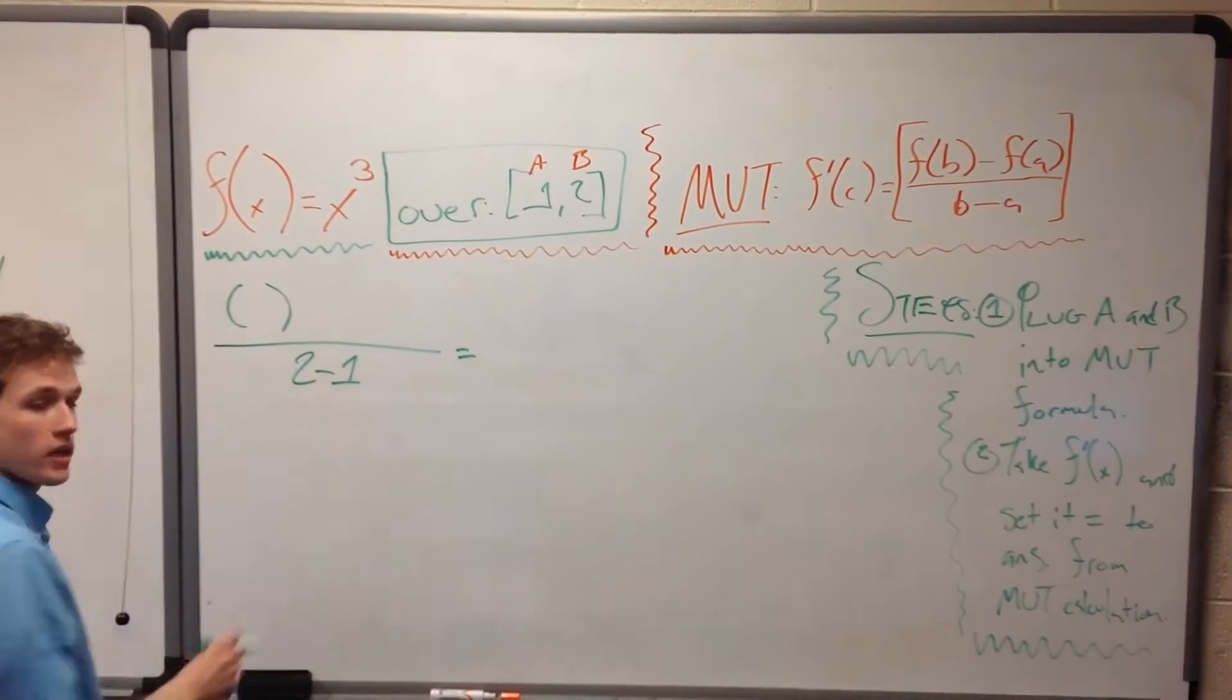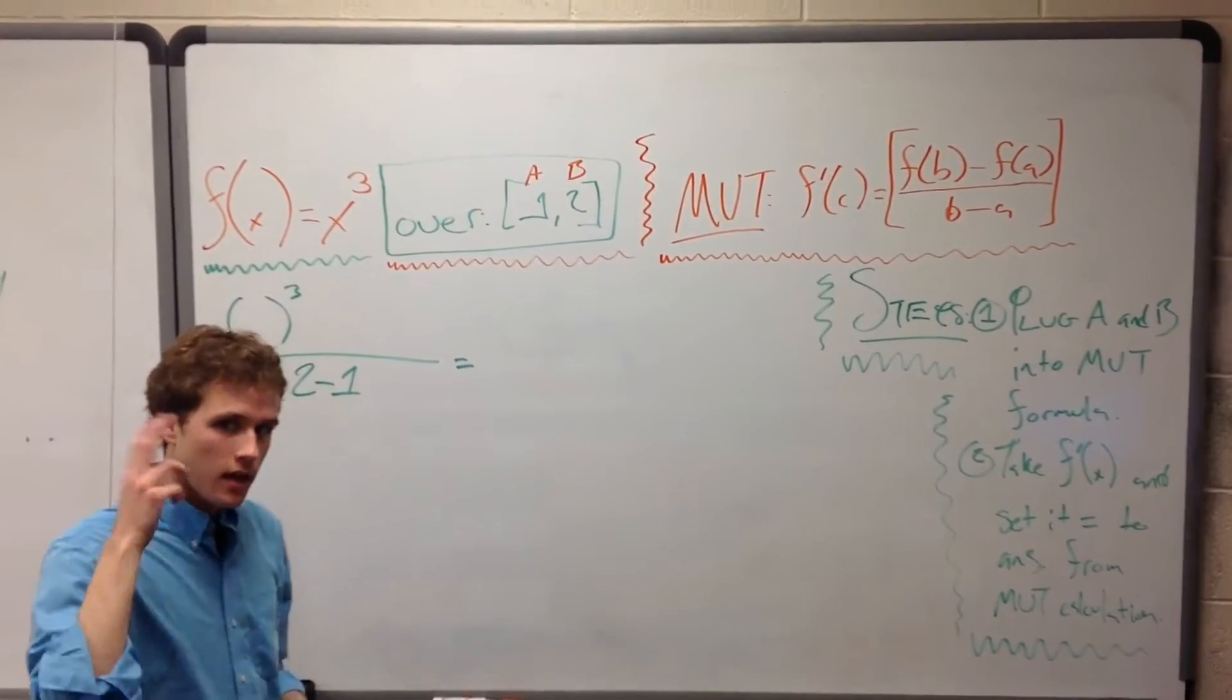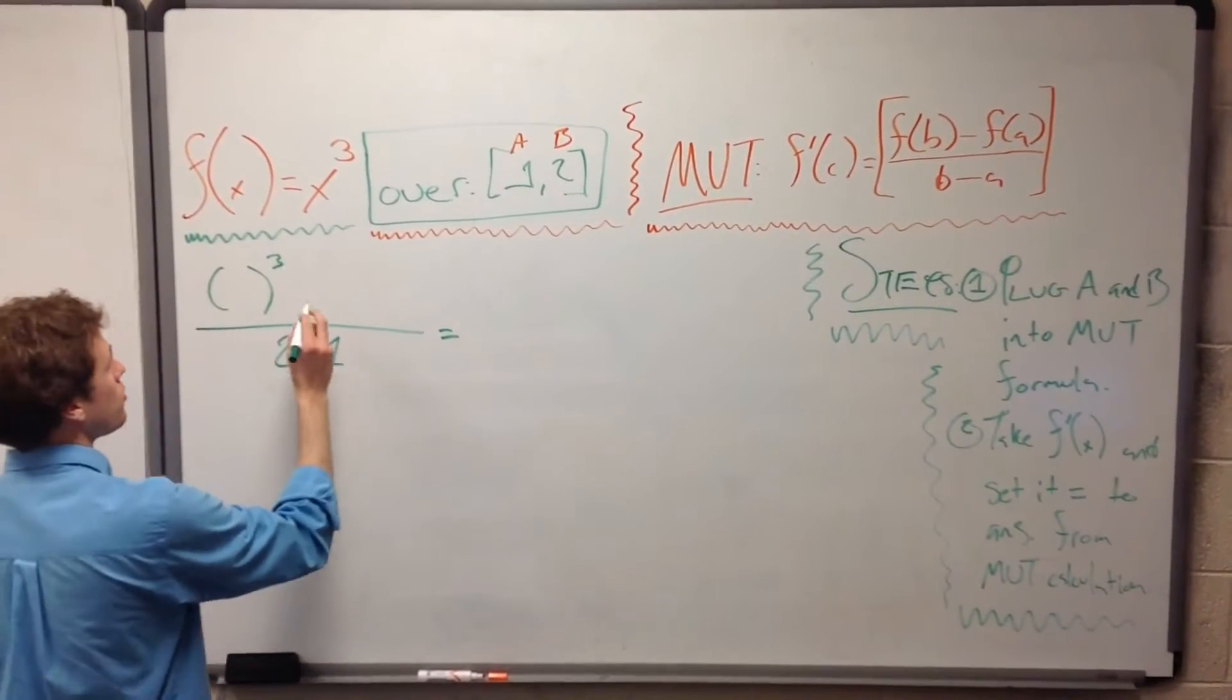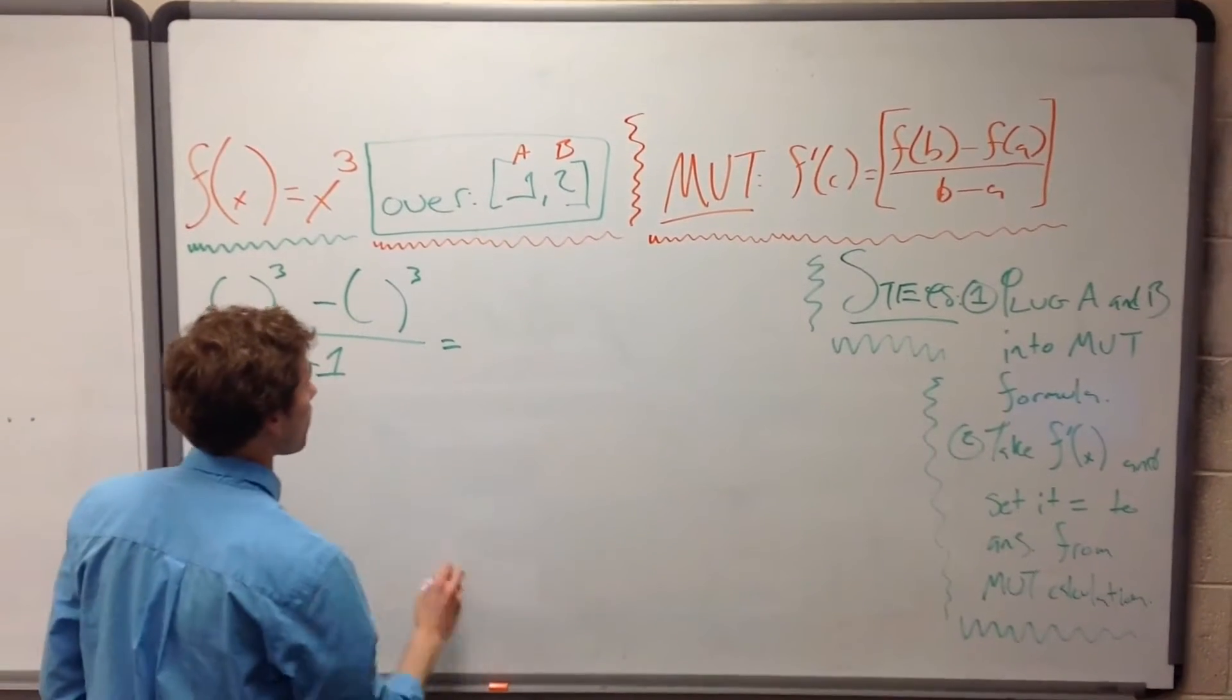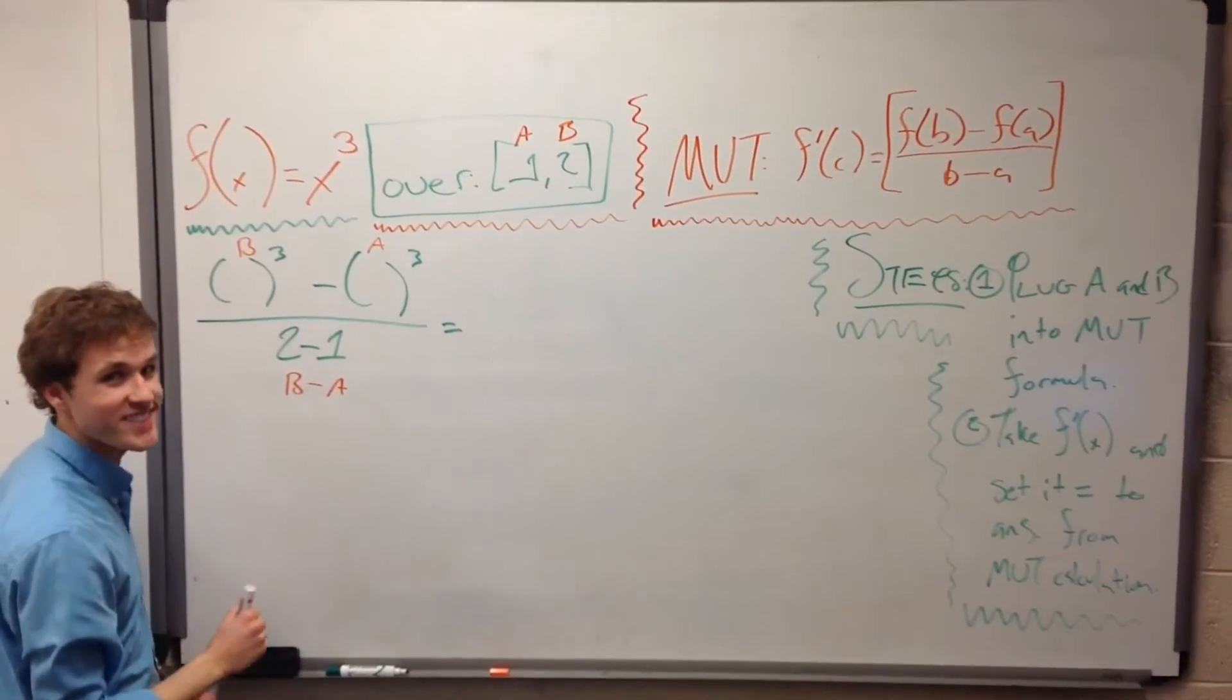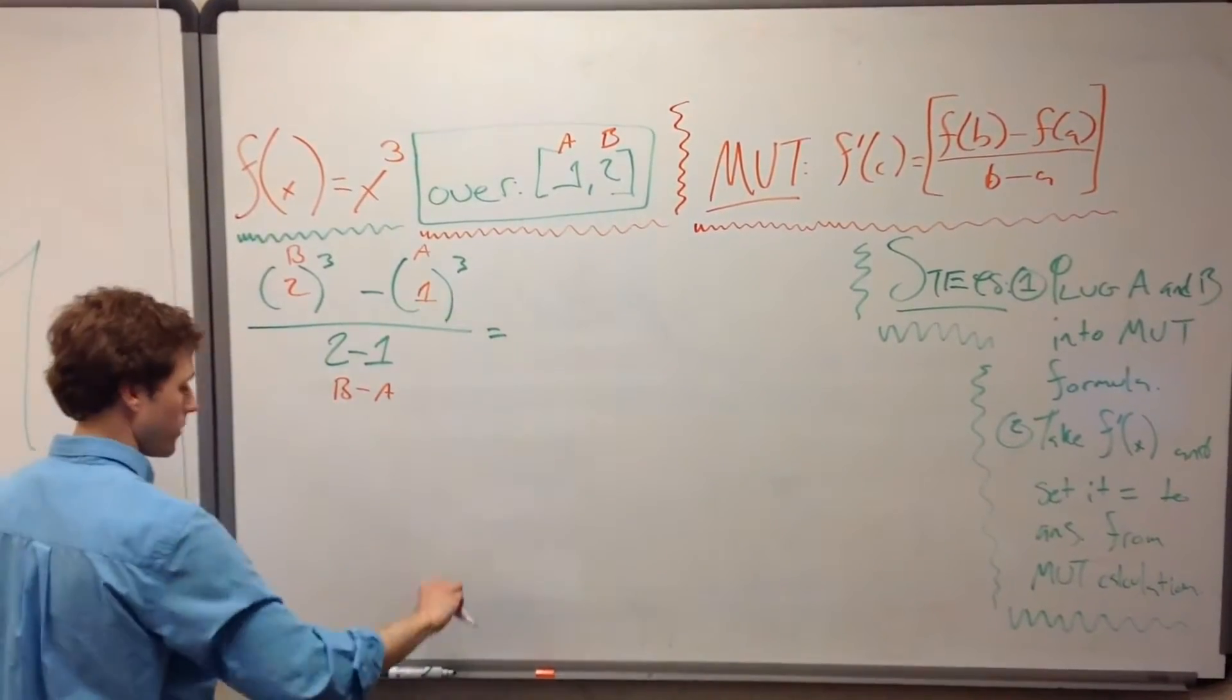Now on the top, we're going to just go ahead and put parentheses and do your function where you have your x's as opposed to putting in values in the beginning, because that can mess with your head sometimes, cause you to make mistakes if you're going too fast. So we have x³ minus x³. And now, if this is B minus A, this is also B minus A, f(B) minus f(A). So we have 2 minus 1.